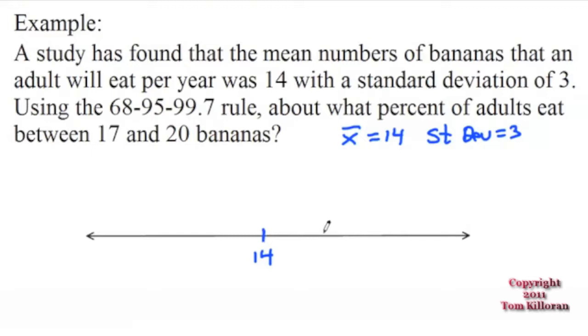And then you're just going to count up standard deviations. So if I go one standard deviation away from the mean, that would be 14 plus 3, which would be 17, another 3 would bring me up to 20, another 3 would bring me to 23. If I go backwards,